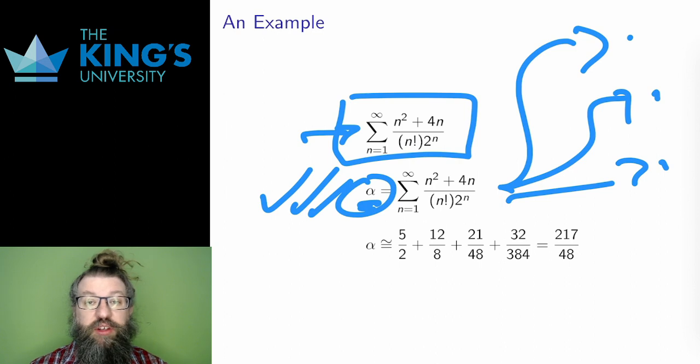But sometimes I do actually want to know approximately what the number is. Series are good at approximation. If a series does converge, then each finite piece of the series is an approximation. In this case, I will look at the first four terms in the series.